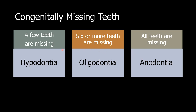Remember that these names are only related to developmental anomalies where teeth are congenitally missing. If you have extracted six or more teeth, it will not be considered oligodontia. If all the teeth are extracted, this is an edentulous jaw — this is not considered anodontia.